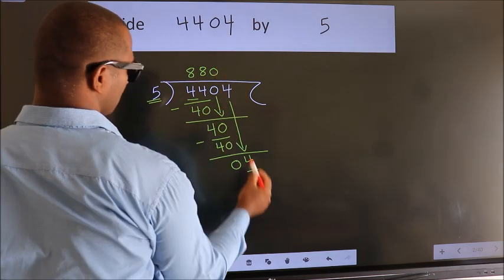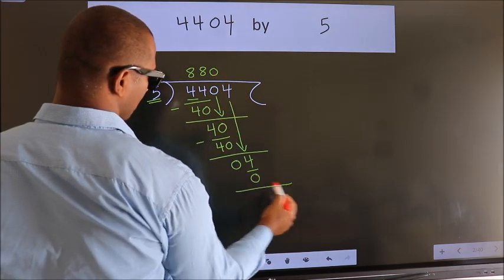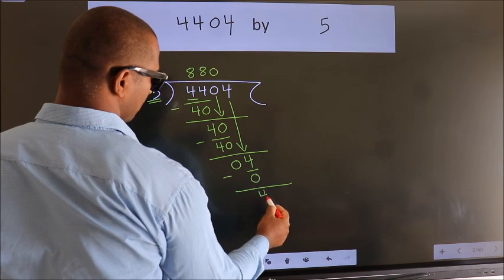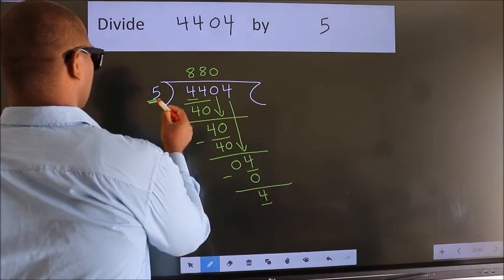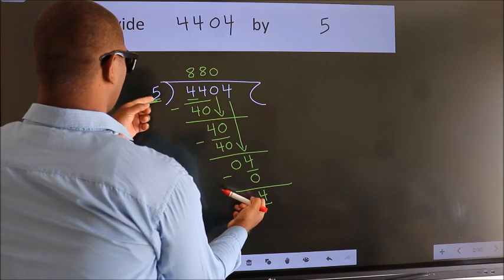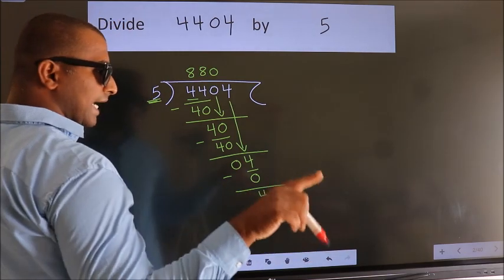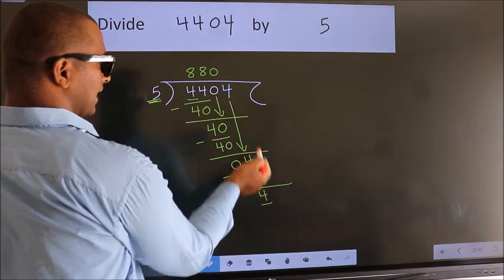So 5 into 0 is 0. Now we subtract. We get 4. Here we have 4. Here 5. 4 is smaller than 5, and we did not bring any number down.